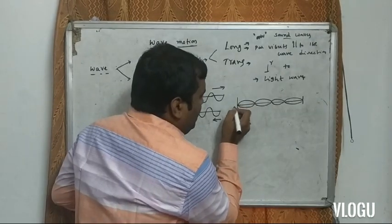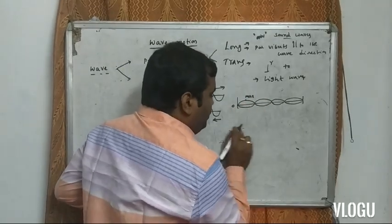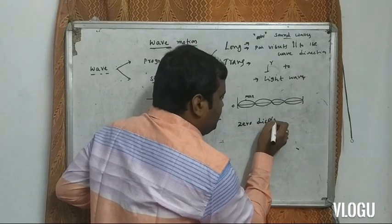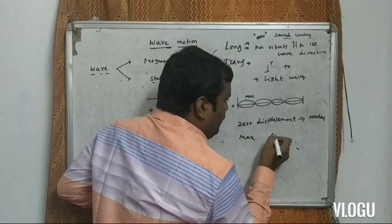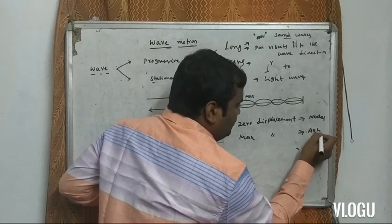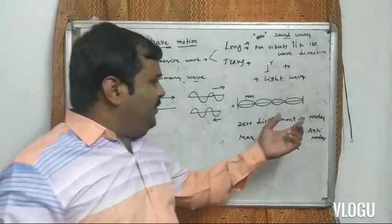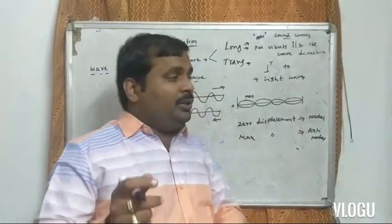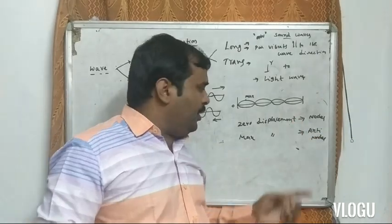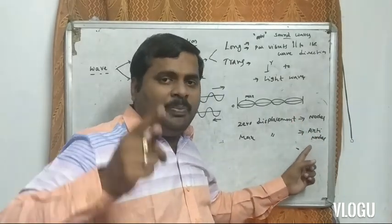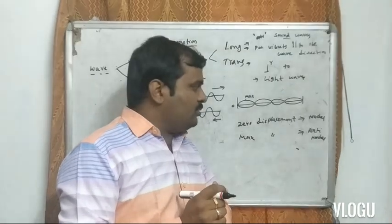In a stationary wave, at a particular point the displacement is zero — those points are called nodes. At another particular point, the displacement is maximum — those points are called antinodes. So a stationary wave consists of two types of points: nodes, which are zero displacement points, and antinodes, which are maximum displacement points.